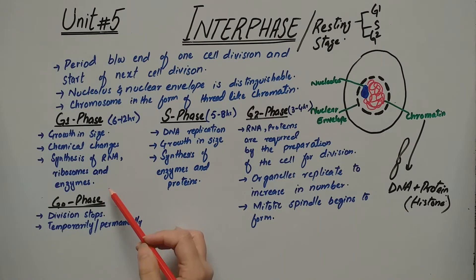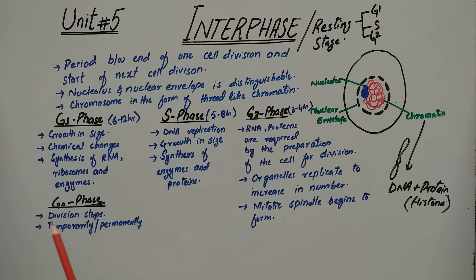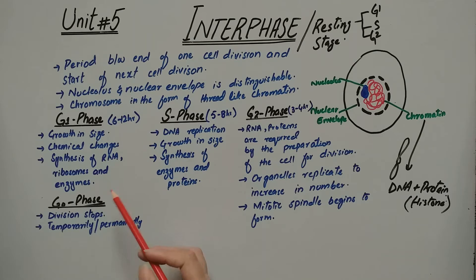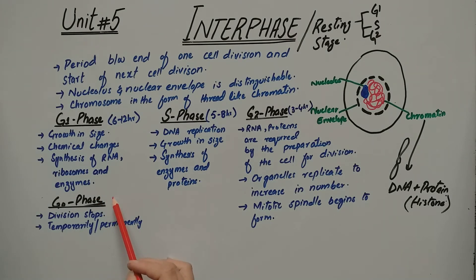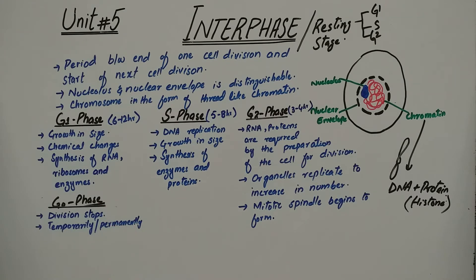At the end of G1 phase, depending on the stimulus or signals received, the cell will either enter G0-phase or proceed to S-phase. G0-phase is the phase where cell division stops — either permanently or temporarily.